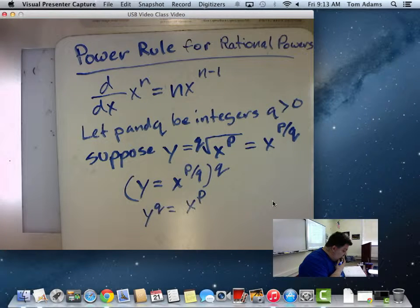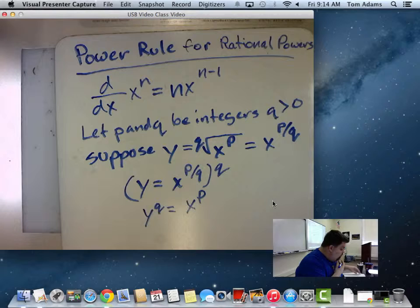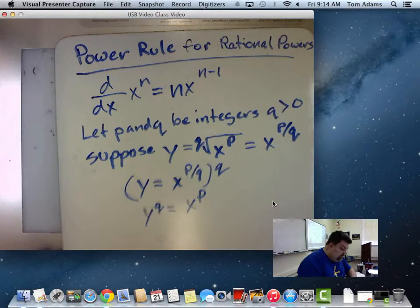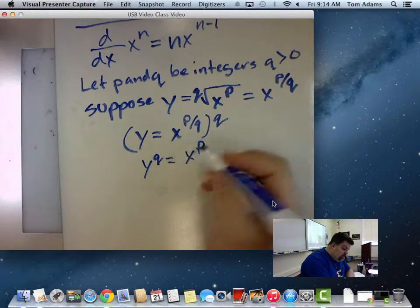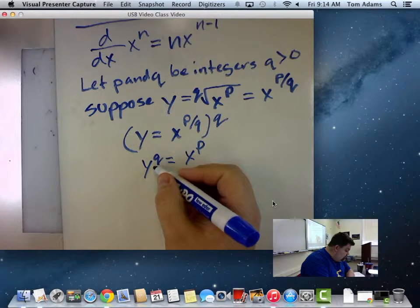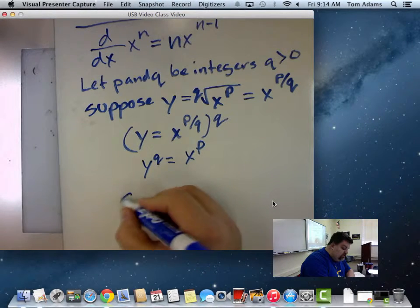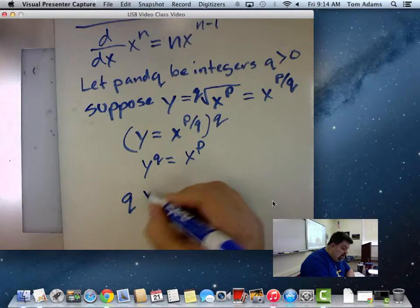And so what I want to do then is since P and Q are integers for which we already have a power rule, we could differentiate both sides of the equation with respect to X to obtain the following. So if I take the derivative of this using the power rule, I toss the Q to the front, and I have Y,